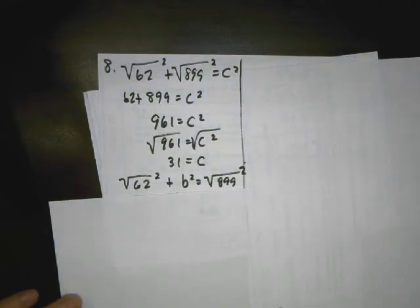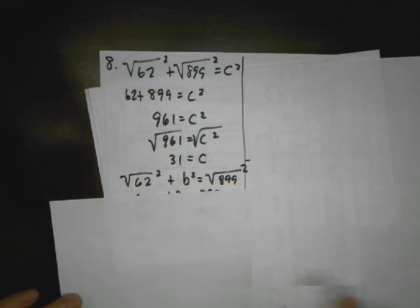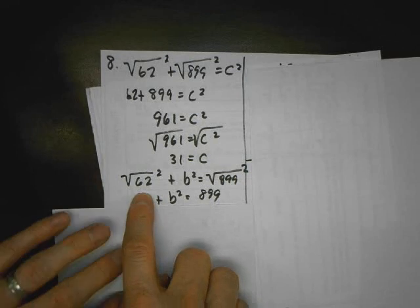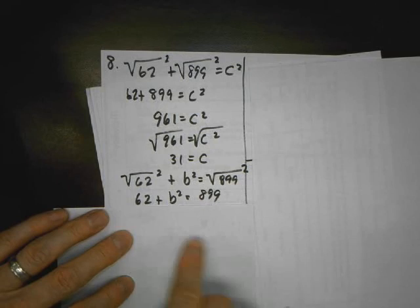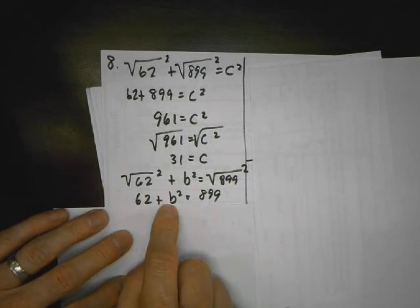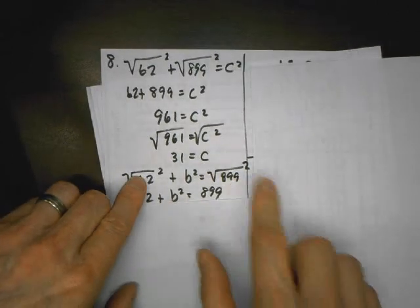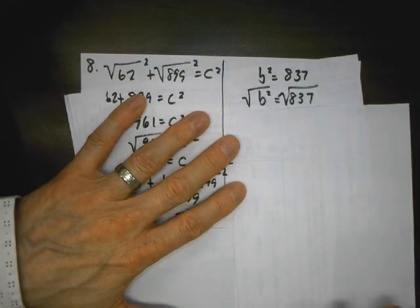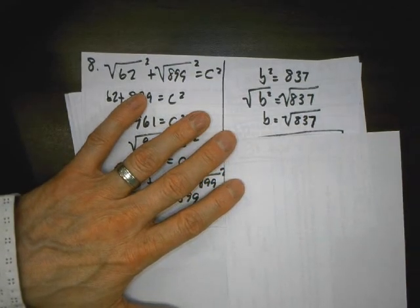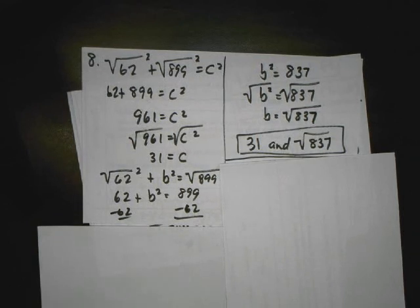Now the other option is you guys can take this, instead of making it one of the legs, you make it the hypotenuse. It can't be this, because remember, hypotenuse has to be the longest side. So again, when we square these, rad 62 squared just becomes 62. The square root of 899 squared just becomes 899. The b squared is still squared, though. That doesn't magically become b. We have to mathematically make it become b like we made these. So I subtract 62 from both sides, and I get b squared equals 837. Now I take the square root of both sides. It should be plus and minus, but since it's a length, we only use the principal or positive answer. And my two answers are 31 and rad 837.